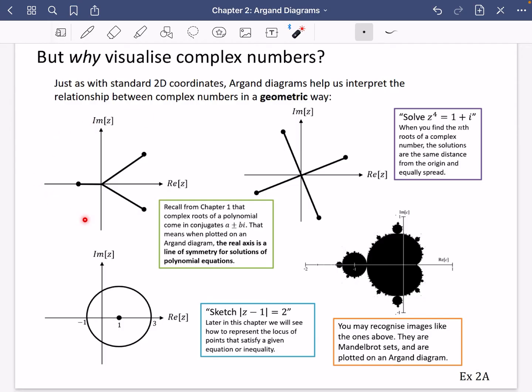So for example, this first diagram here should remind you of some stuff from chapter one, where we said that the complex roots of a polynomial came in these pairs, these complex conjugate pairs, a plus or minus bi. So you can see here, these two are going to be the same real number, but the imaginary number is going to be the same but negated. So you get this kind of symmetrical pattern across the real axis. It means when plotted on an Argand diagram, the real axis is a line of symmetry for solutions of polynomial equations. And this gets used a lot in problem solving questions.